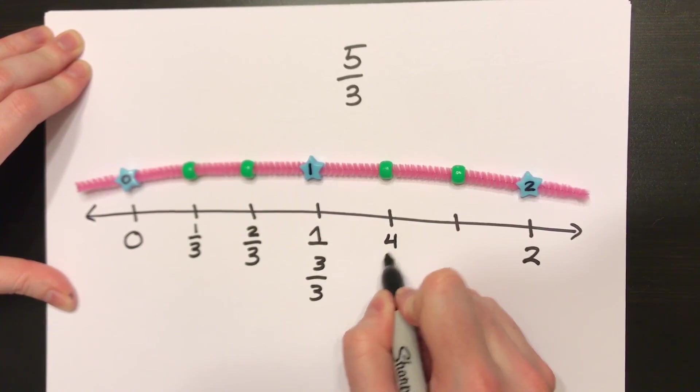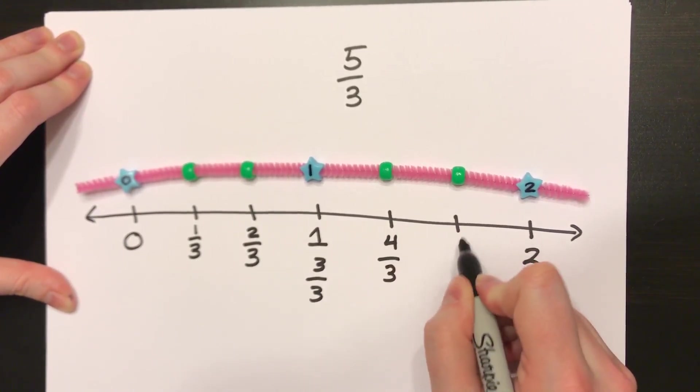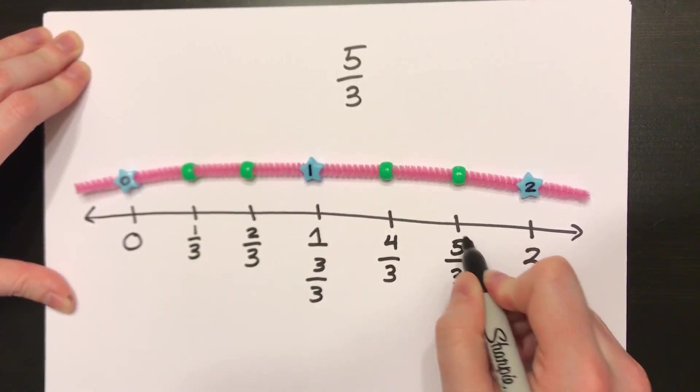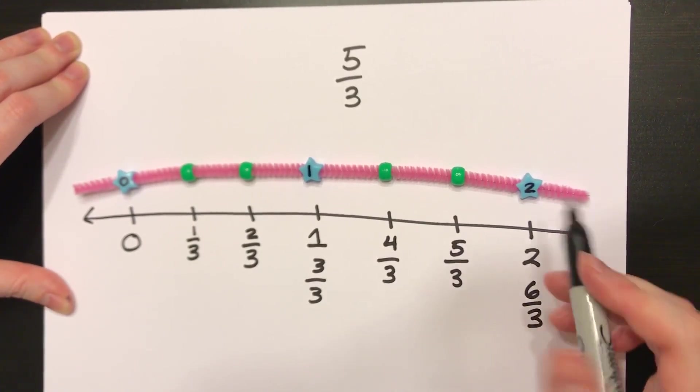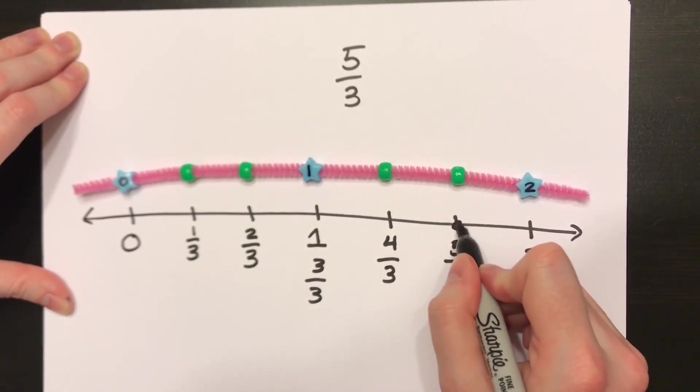Keep it going. After that would be 4 thirds, 5 thirds, and I can finish it by even writing underneath 2. It would be 6 thirds. Finding 5 thirds on the number line, put a little point.